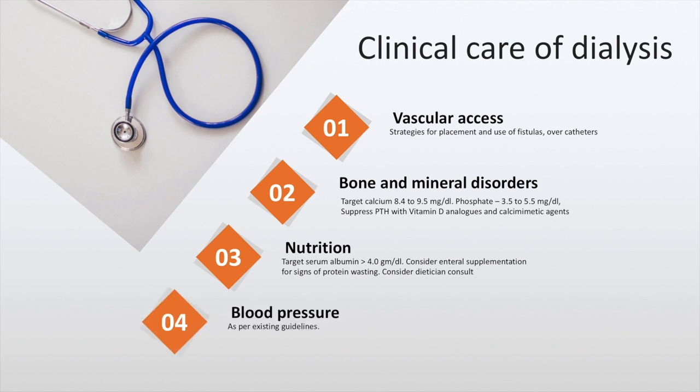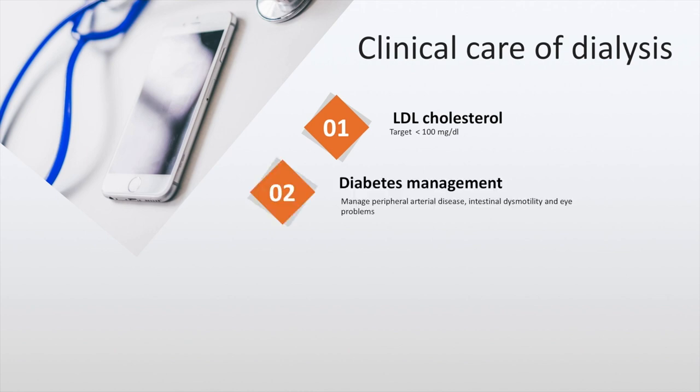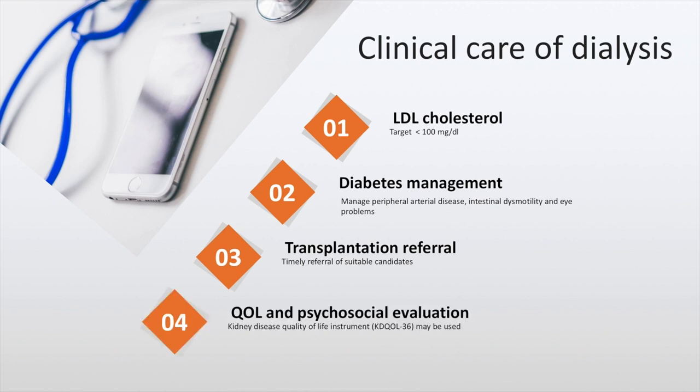Blood pressure must be maintained according to existing guidelines and we prefer a blood pressure target of 130/80 in patients with chronic kidney disease. We must target an LDL cholesterol of less than 100 milligrams per deciliter. Diabetes must be managed according to existing standard of care and transplantation referral must be undertaken early. The quality of life and psychosocial evaluation may be done according to the Kidney Disease Quality of Life Instrument, or KDQOL-36, to assess the quality of life.